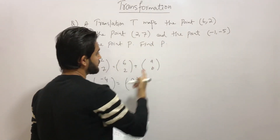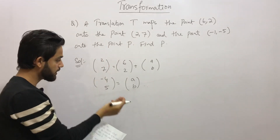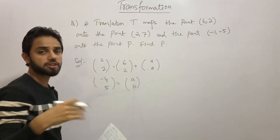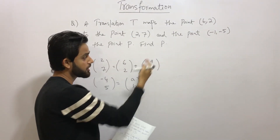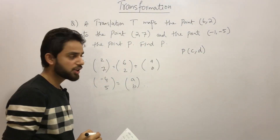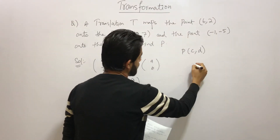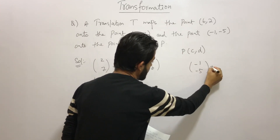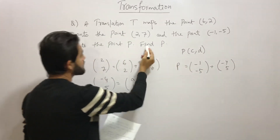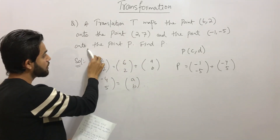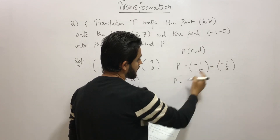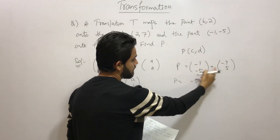Now applying this translation (−4, 5) to the point (−1, −5) gives us point P. The coordinates of P are: x = −1 + (−4) = −5, and y = −5 + 5 = 0. So P is at (−5, 0).